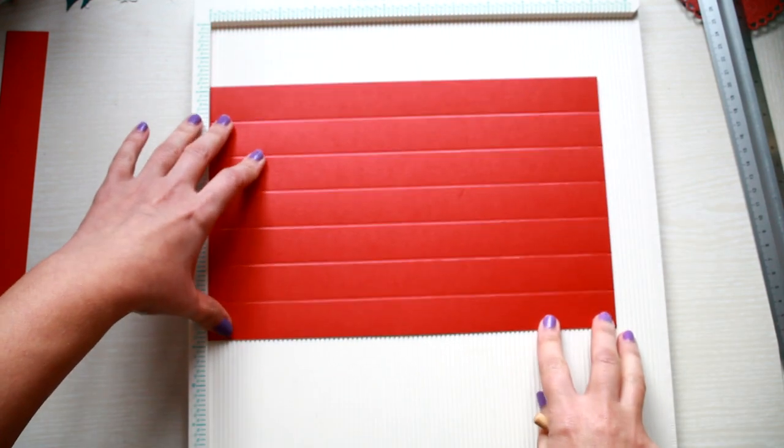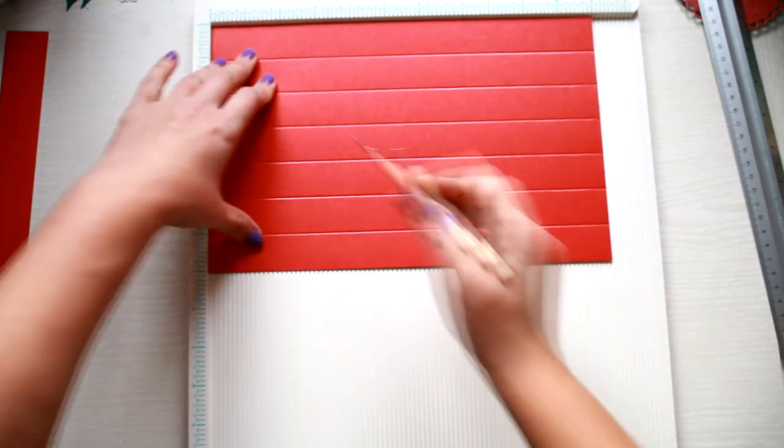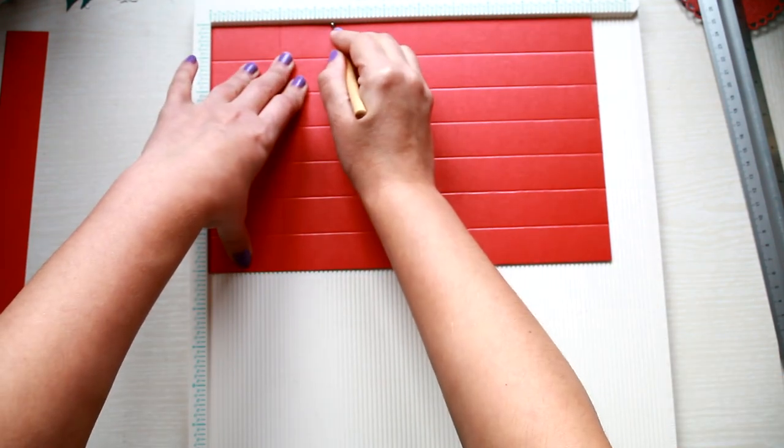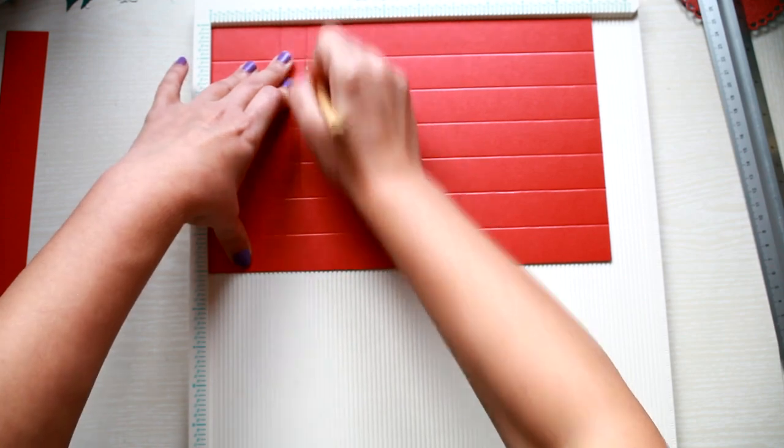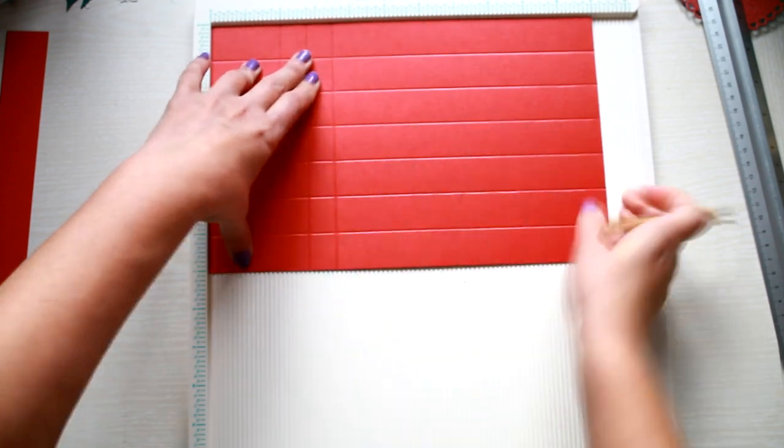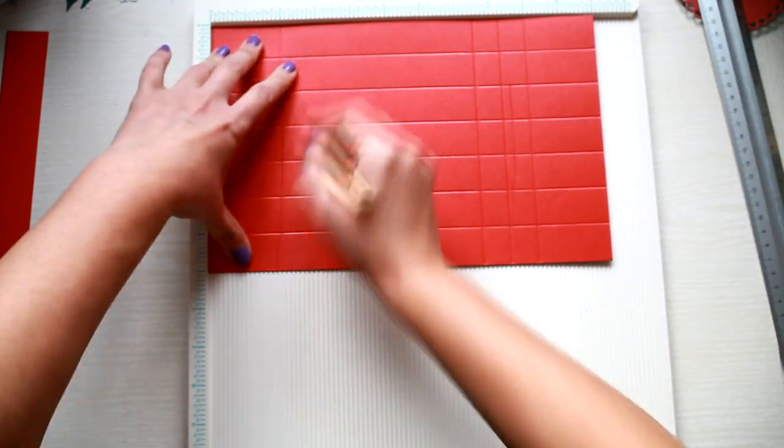Then turn your paper and score at 2 inches, 2 inches and 3 quarters, and 3 inches and a half. Do the same thing on the other side.